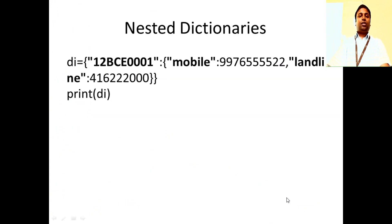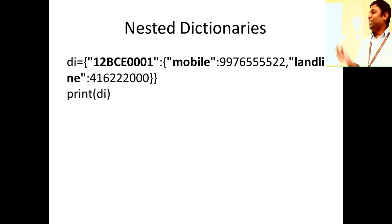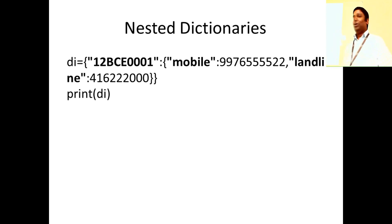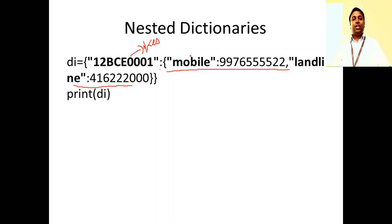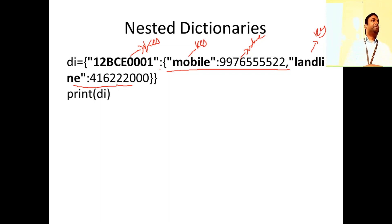Now, nested dictionaries — you can have a dictionary within a dictionary. For example, a student can have multiple phone numbers — a mobile number and a landline number. The key is '12BCE001' and for this key the value is another dictionary. In that inner dictionary, 'mobile' and 'landline' are keys with their respective numbers as values. So you have a dictionary embedded within another dictionary.